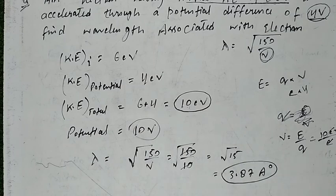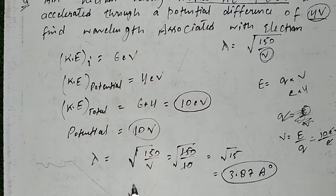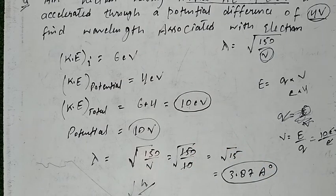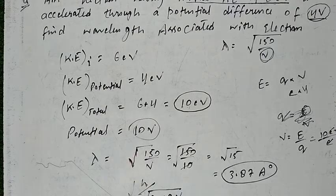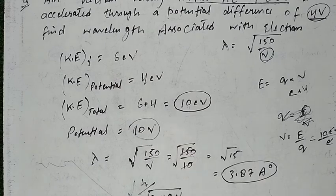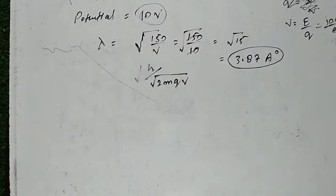If we have to calculate de Broglie's wavelength for any particle other than an electron, we use the general formula λ = h/√(2mqV), where m is the mass of the particle and q is its charge.